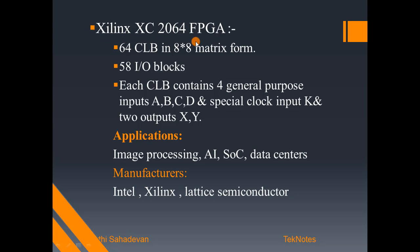In this example, we have the XC2064, which is a basic early FPGA. In that FPGA, there are 64 CLBs arranged in an 8×8 matrix, and 58 input/output blocks. In each CLB, there are 4 general purpose inputs — A, B, C, D — plus 1 clock input and 2 output lines.